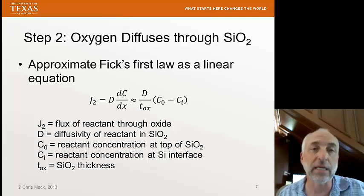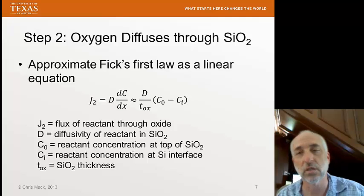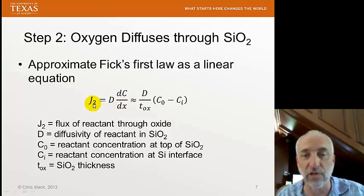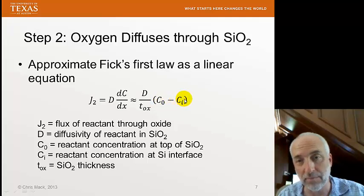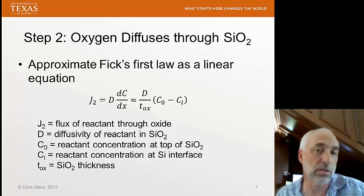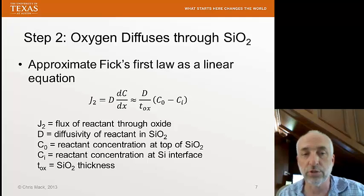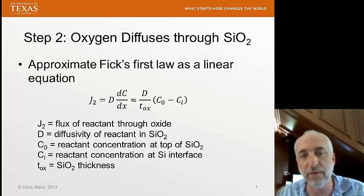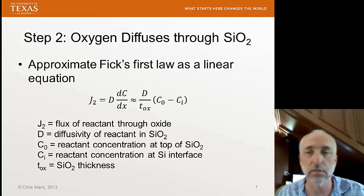Now the material diffuses through the silicon dioxide to the silicon interface. Again, we approximate Fick's first law as a linear equation. J2, the flux of reactant through the oxide film, equals the diffusivity multiplied by the difference in concentration from the top to the bottom of the silicon dioxide, divided by the thickness of the silicon dioxide — that is, dC/dx is approximated as the linear slope of the concentration gradient. This is a reasonable approximation when deviation from linearity is small.